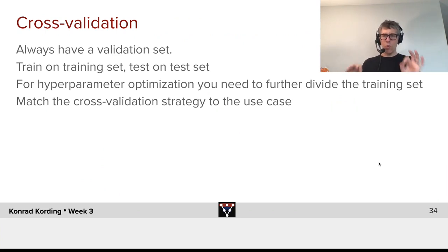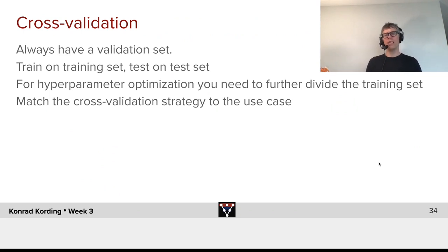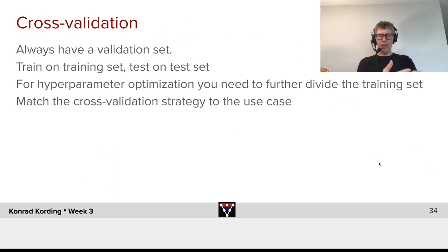Now, just as a word of warning: we do hyperparameter optimization. We do it explicitly, where we might search through, say, the number of layers that we use — and you'll be doing that later on today. But we also do it implicitly: we try a ResNet, then we try another neural network, then we try Inception, and we choose whichever is better. That is technically hyperparameter optimization. And here's a huge problem. If I take a training set and a testing set and set that testing set aside, I cannot use that test data to figure out which algorithm I should use. That is what I would call leakage — where you look at the test set and then innovate with the algorithm so that you get good on the test set.